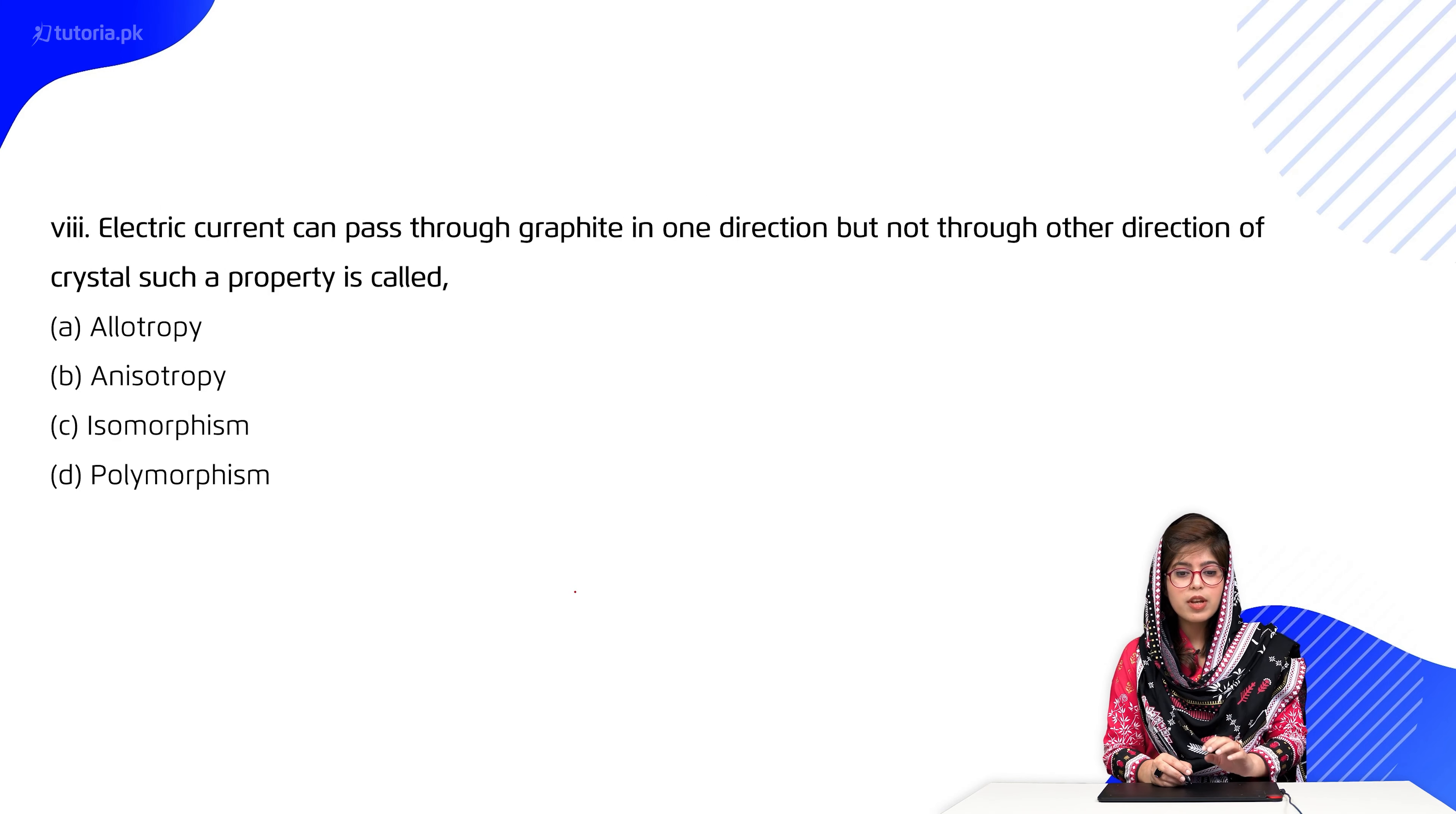Eight: Electric current can pass through graphite in one direction but not through the other direction of the crystal. Such a property is called: A) allotropy, B) anisotropy, C) isomorphism, D) polymorphism. So it's B, that is anisotropy, jis mein mukhtlif physical properties ka magnitude different ho jaata hai ek substance ke andar different directions mein.